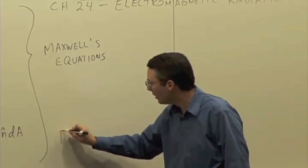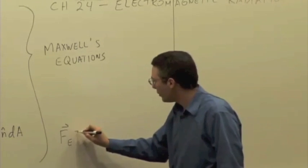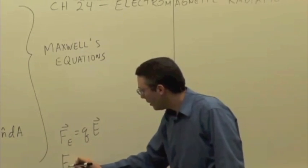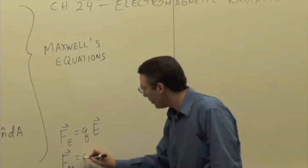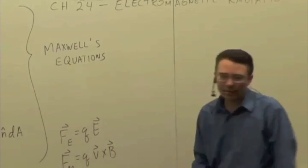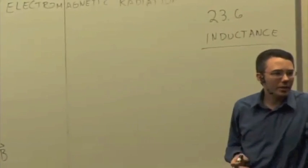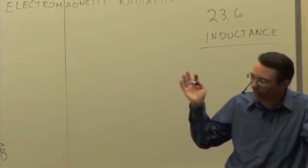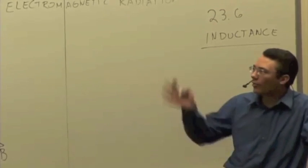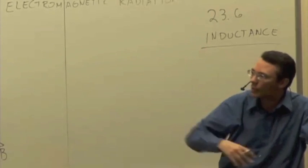So if you have these and the electric force equal to Q times E, magnetic force is equal to QV cross B. They basically encapsulate everything we know about classical, non-quantum, but classical electric and magnetic fields, okay? So all of electricity and magnetism is summed up in these equations.